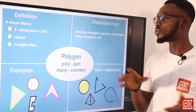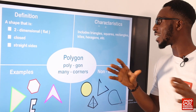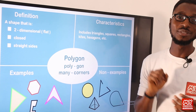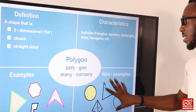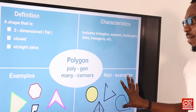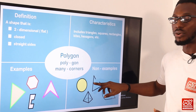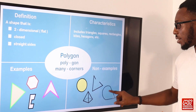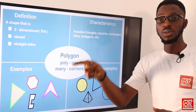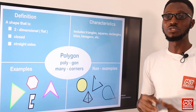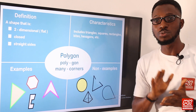Characteristics include triangles, squares, rectangles, kites, hexagons, nonagons, and what have you. You can see some displays of examples, and you can see these are non-examples. Why? If you notice, these are not actually closed, and this is not two-dimensional. So a polygon is definitively a 2D shape.